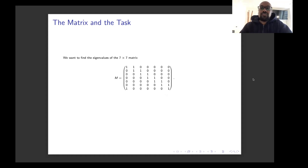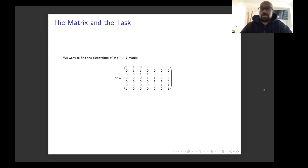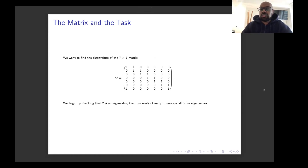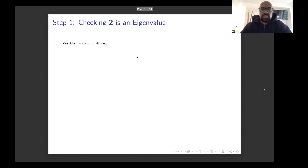There are ways to do that inductively, but it might be cumbersome or not easy to see. Now we're going to see a very clever way to figure out all the eigenvalues of this matrix that doesn't use that at all, and instead looks at the interesting cyclical nature of the matrix. So we're going to start by showing that 2 is an eigenvalue.